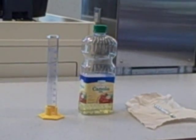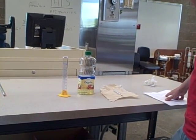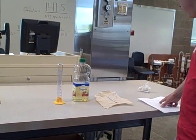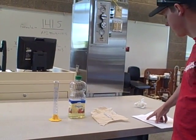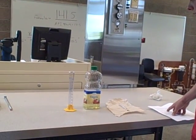API gravity is a measure of how heavy or light a liquid is compared to water. If its API gravity is greater than 10, it is lighter and floats on water. If it is less than 10, it is heavier and sinks.